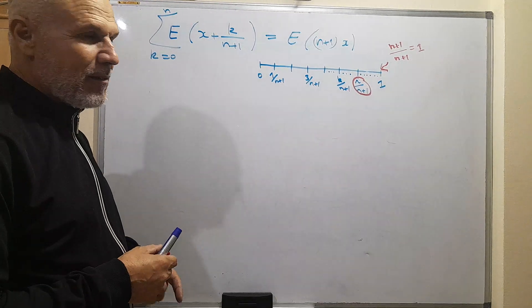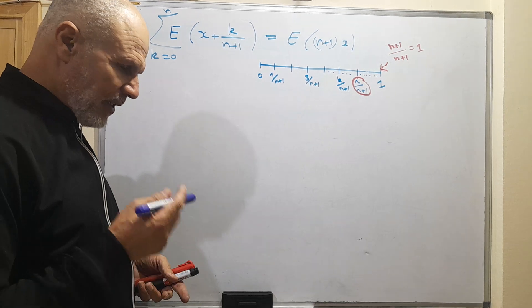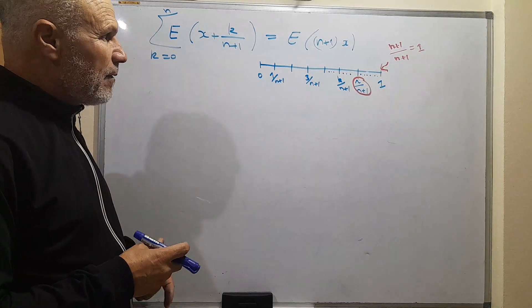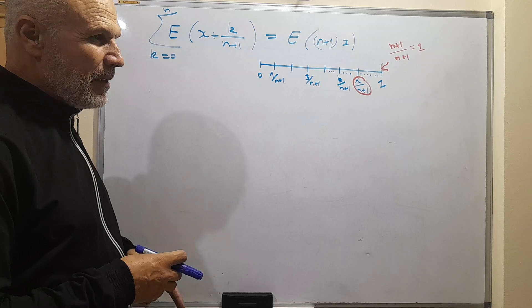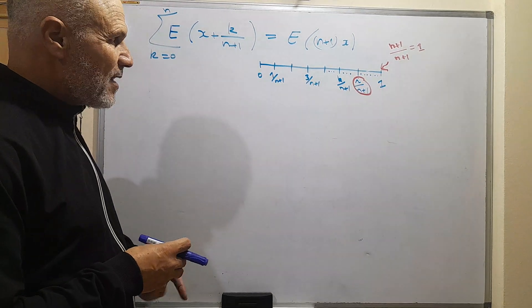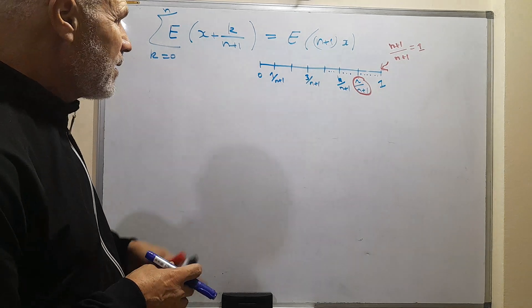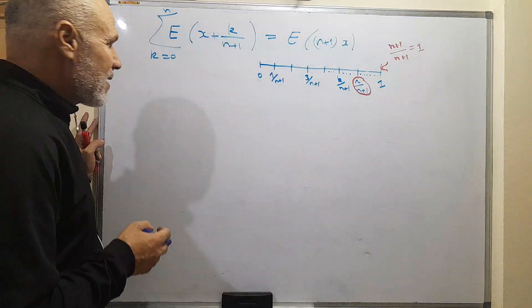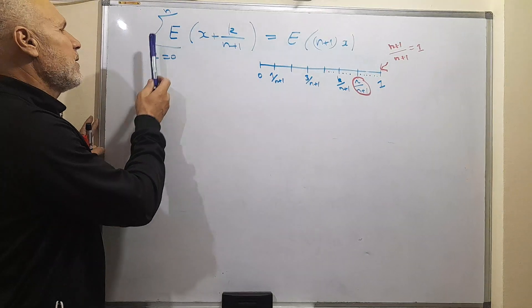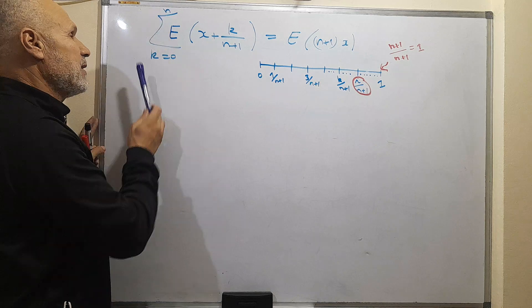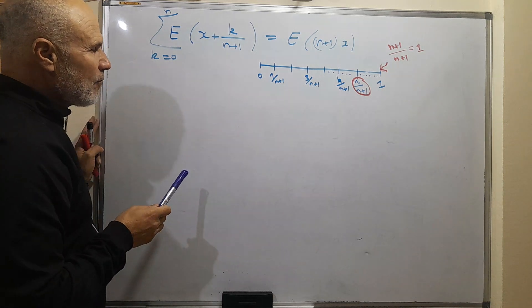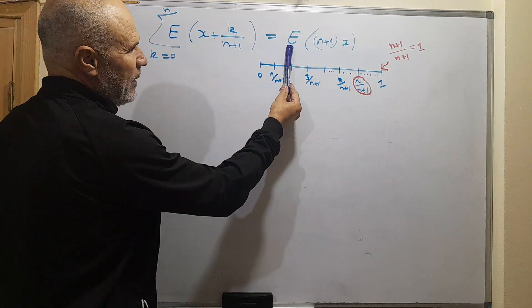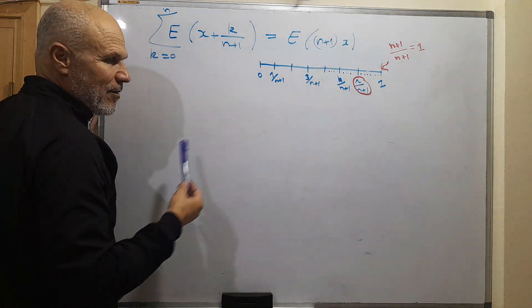Assalamu alaikum. This exercise was given to me by a student of mine about one week ago, and I chose to answer by video so other persons can get benefit from it. The exercise says: prove that the sum from k equals zero to n of the integer part of (x + k) / (n+1) is equal to the integer part of (n+1) times x, where x is a real number.